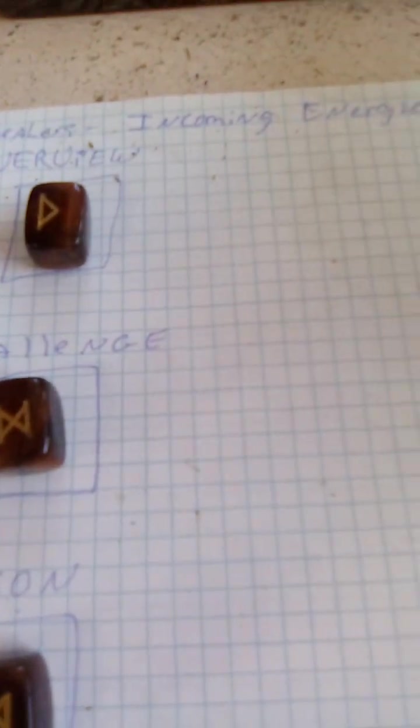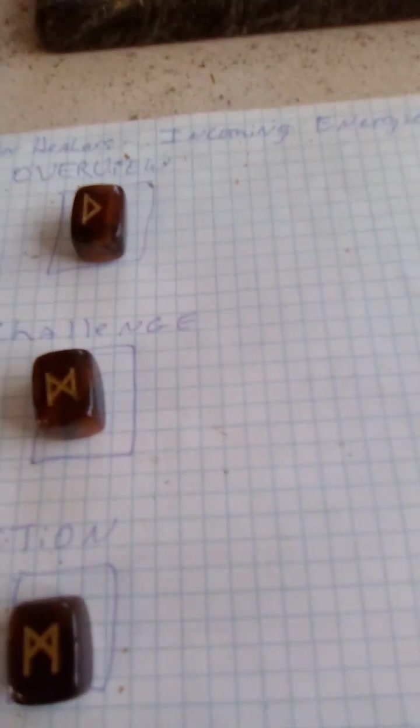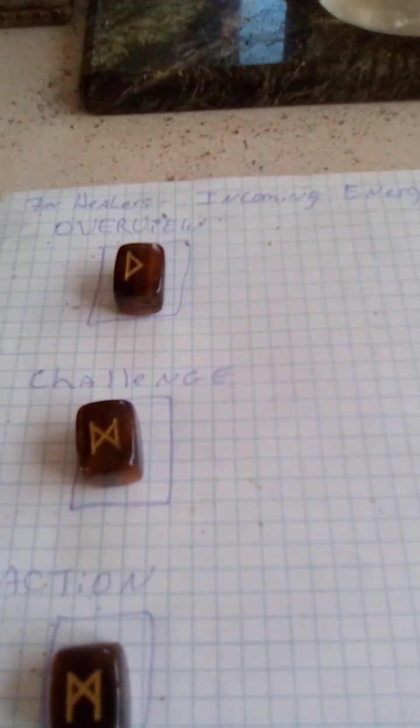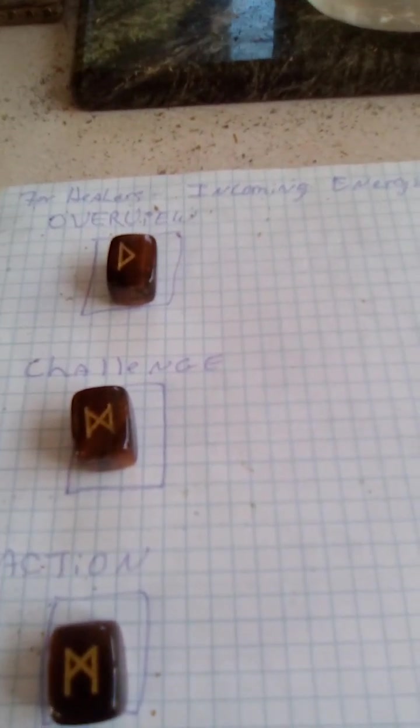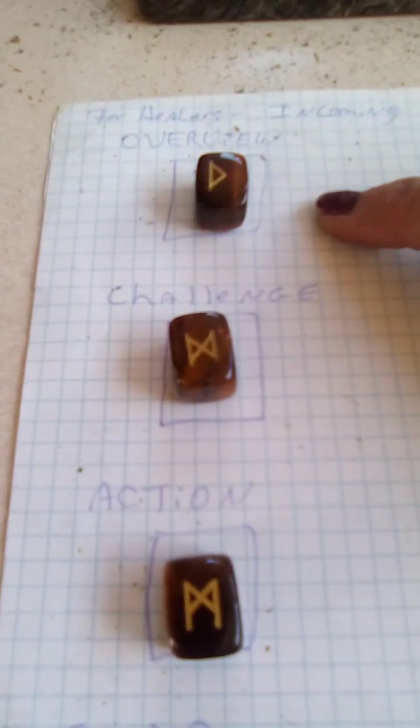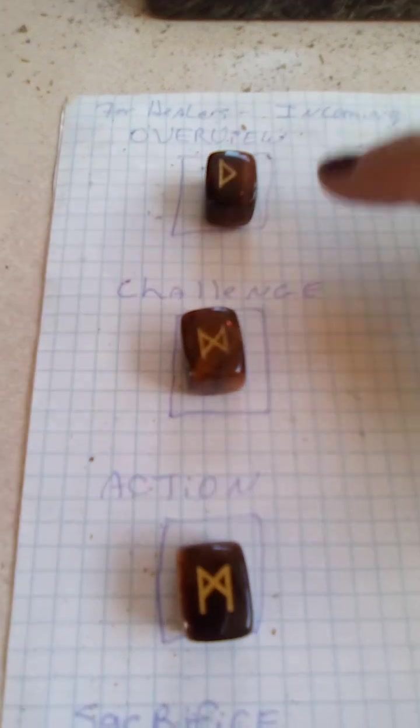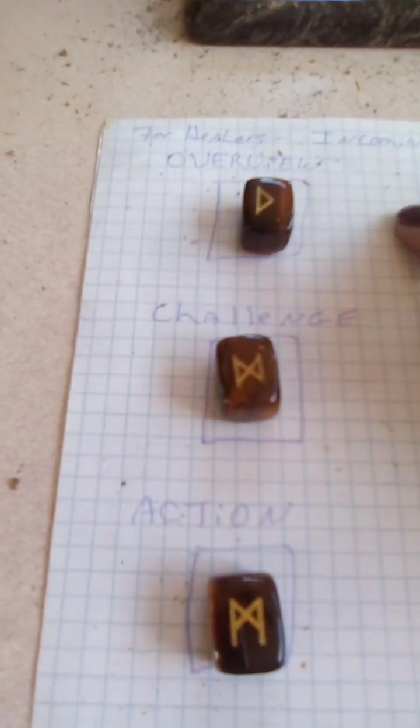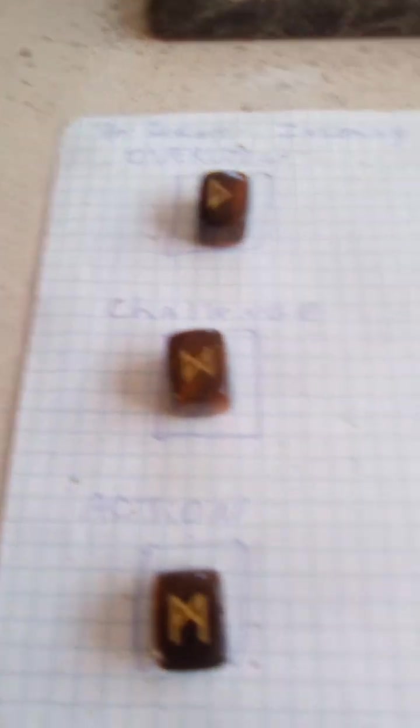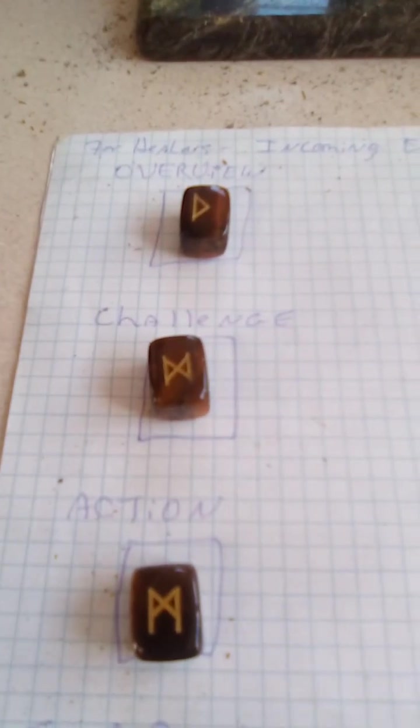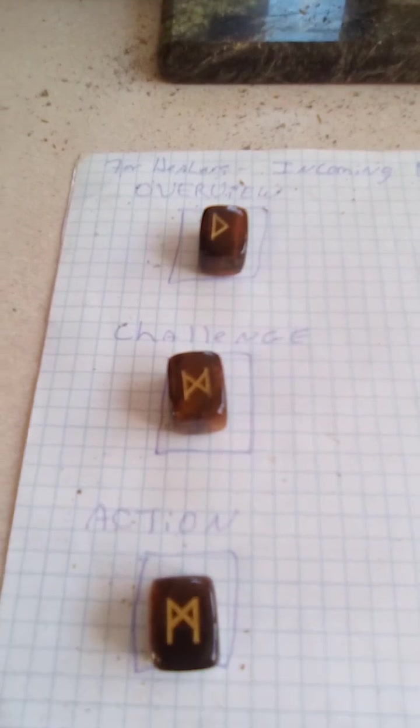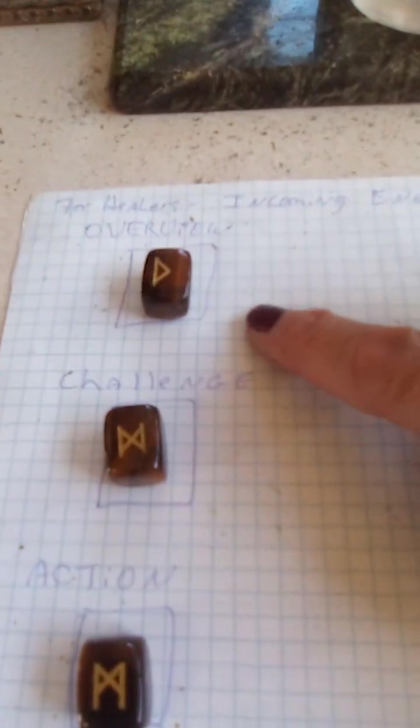So this is, it says for healers, incoming energies. Guys, this is absolutely huge. I'm almost in tears because I feel like you're telling me that this is exactly where I've been needing to go. So for your overview, you have Thurias. Thurias is a doorway. If you have a healing gift, it is saying that you need to go through this doorway. Nothing from the past matters, but your gifts, your spiritual plan, who you're supposed to help. Now. Okay. Of course, you got to have your boundaries up, but it's saying, don't be scared to go through this doorway.